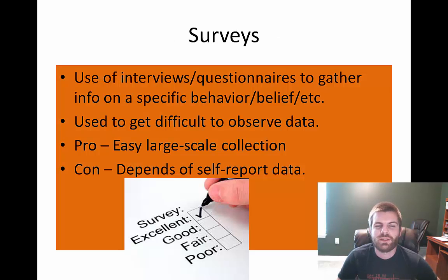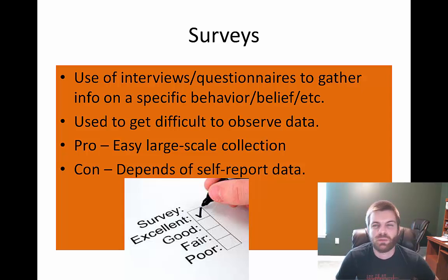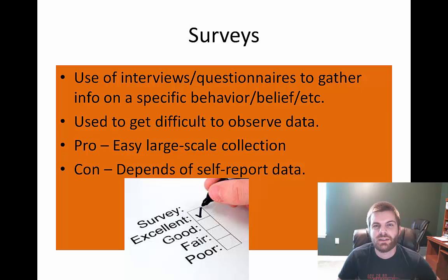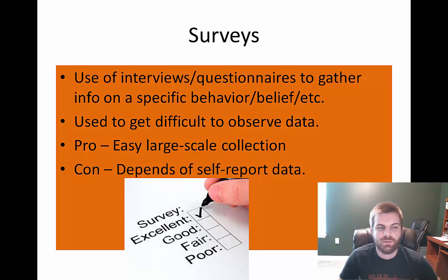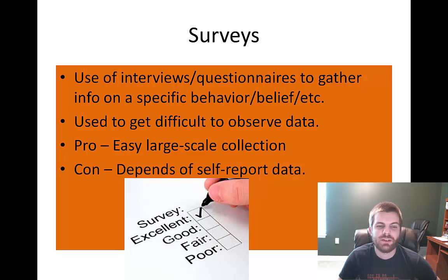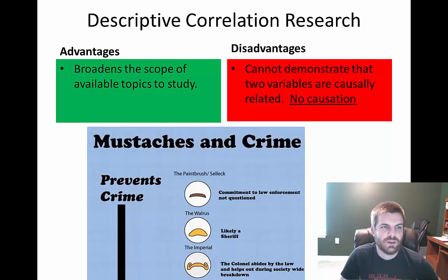One of the final descriptive correlational methods is the survey or questionnaire. This is when you use interview-type questions or an actual questionnaire to gather information on a specific behavior or belief. Surveys are really good because they allow you to get a lot of data at one time and are pretty easy to collect — if you're in a room with a hundred people, you dish out a survey and get it back in minutes. The main advantage is large-scale data collection, but the major disadvantage is that it is fully dependent on self-reporting data, so people will fall victim to a number of psychological phenomena.